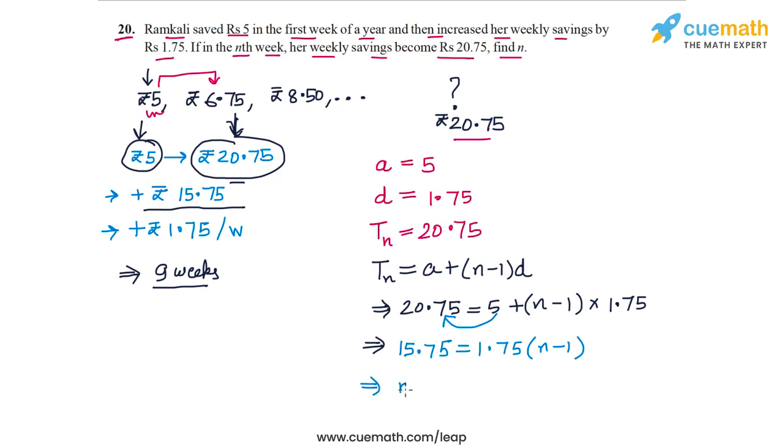And now let's divide by 1.75 on both sides, so we get N minus 1 equal to 15.75 by 1.75, that is equal to 9. So N minus 1 is 9 and this means N is 1 plus 9 or 10.